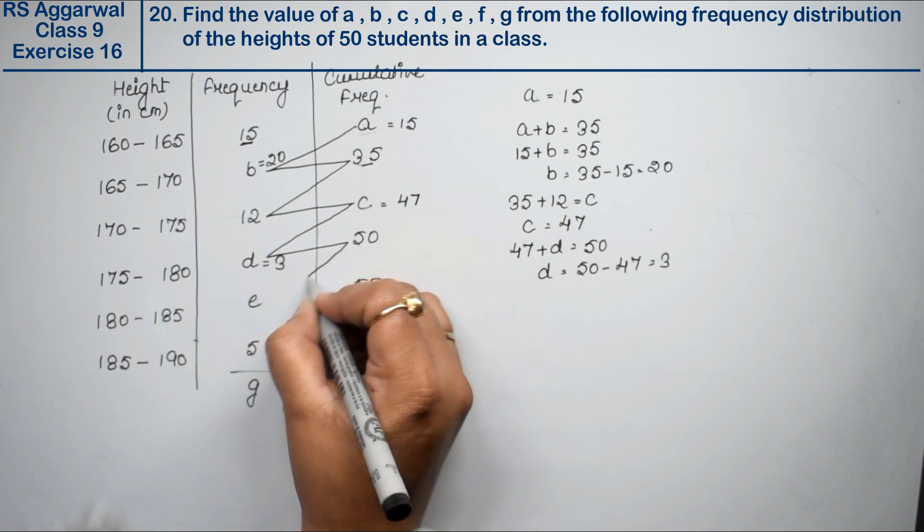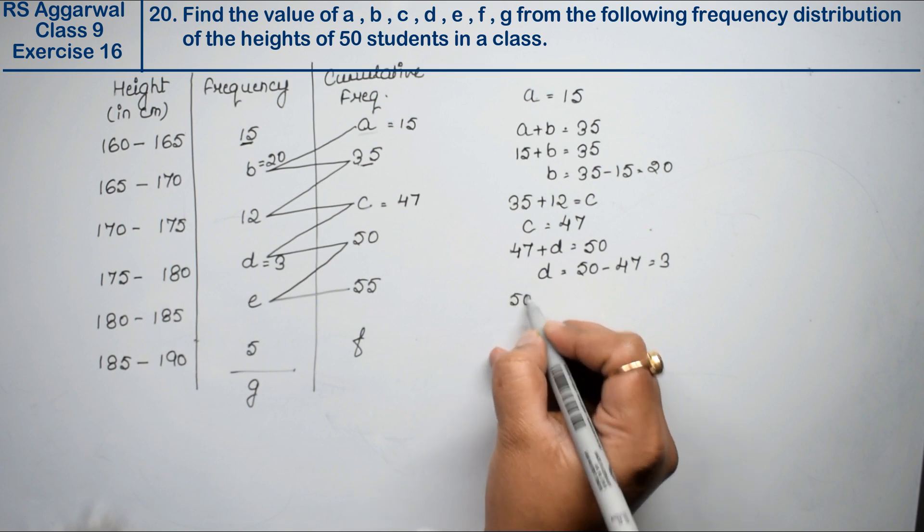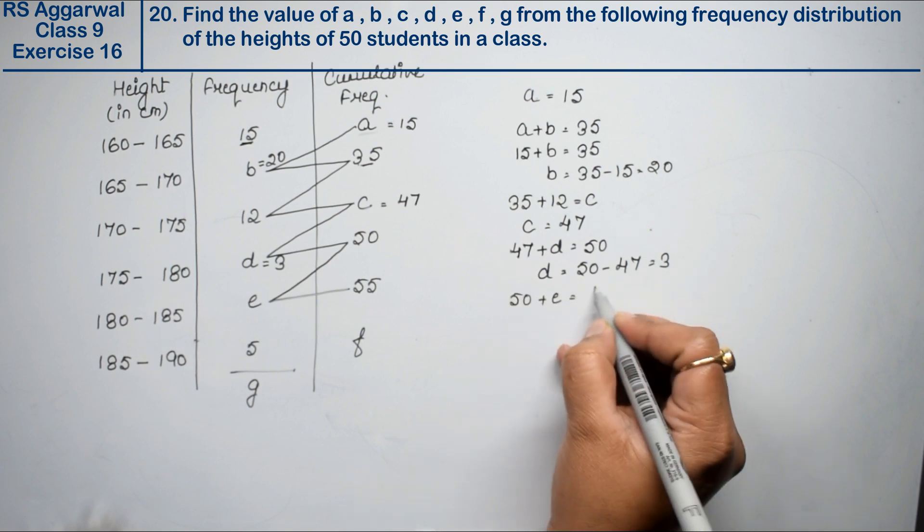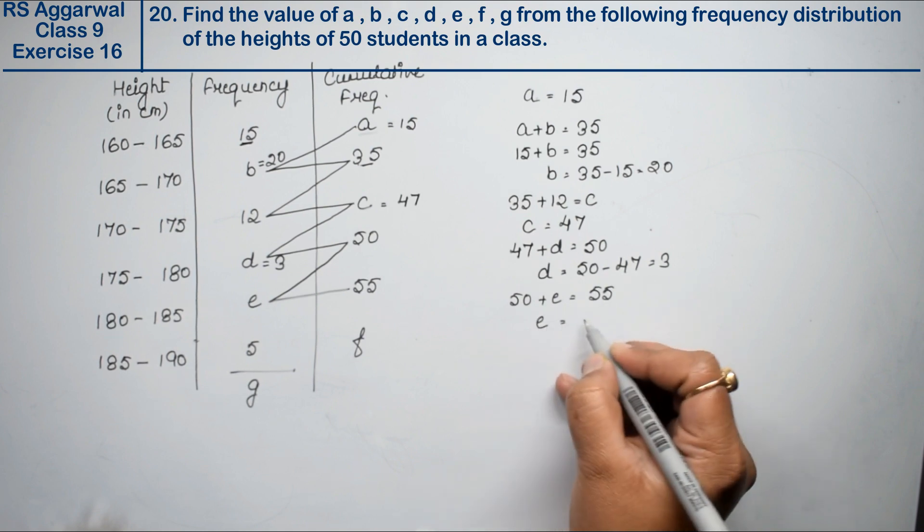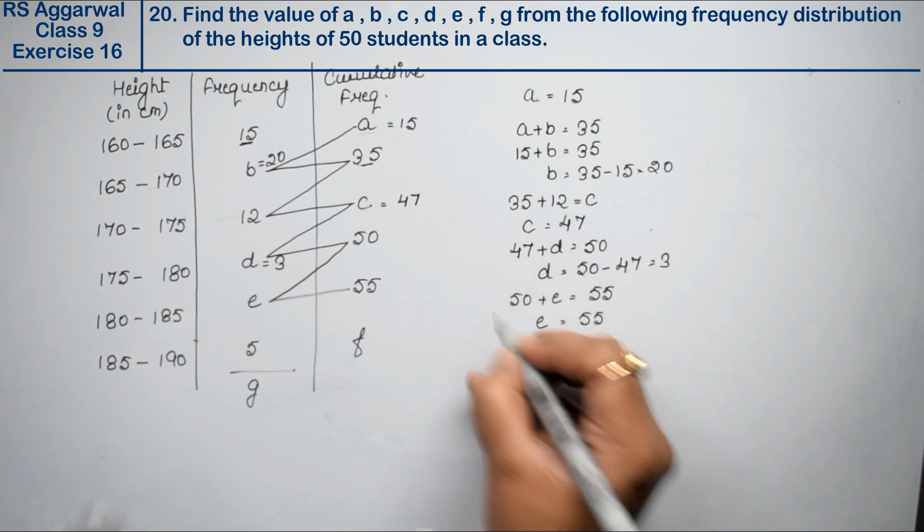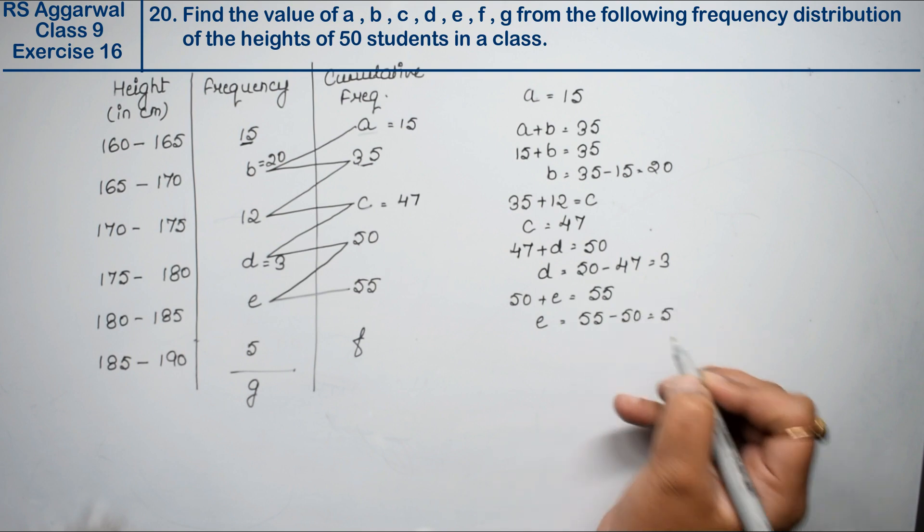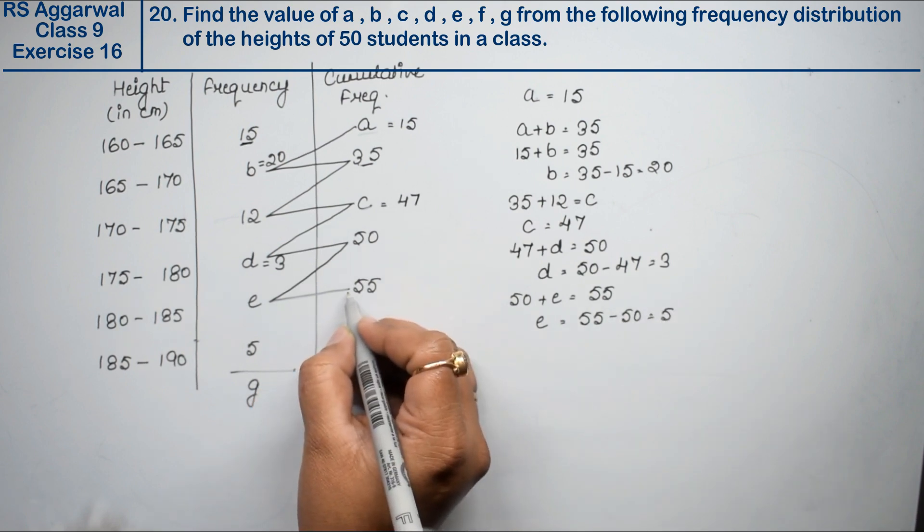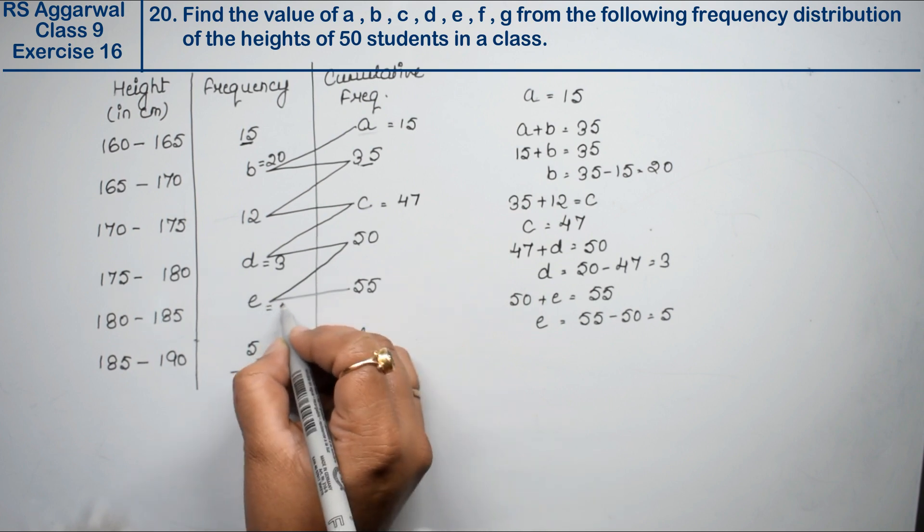Now, 50. What will I add? 55. 50 plus E equals to 55. So how much is E? 55 minus this equals to 5 is the answer. Now, E is 5.